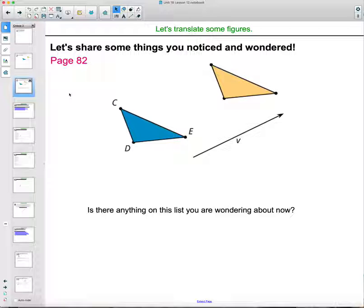So some things that people noticed on here was different colors, blue and yellow. We've got two triangles. They look like they're the same size. One has the vertices labeled, another one doesn't. Saw this vector off to the side or this line segment with an arrow on it labeled V. Wondered about why is that there? Does it have something to do with these triangles and one starting here and one being here?